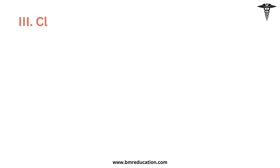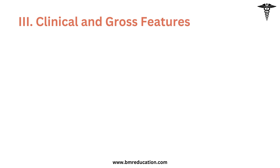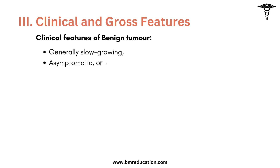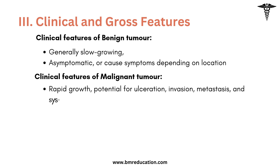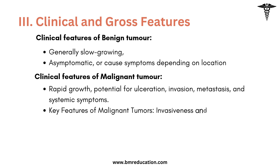Let's look into the clinical and gross features of benign and malignant tumors. Clinical features: benign tumors are slow-growing, asymptomatic, or cause symptoms depending on location. Malignant tumors grow rapidly, have potential for ulceration, invasion, metastases, and systemic symptoms. Invasiveness and metastases are the key features of malignant tumors.